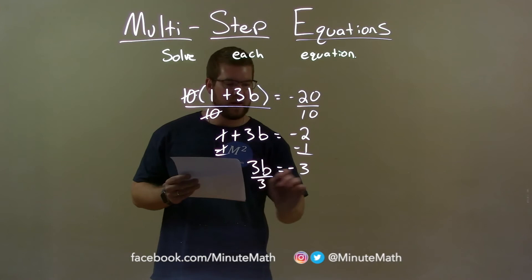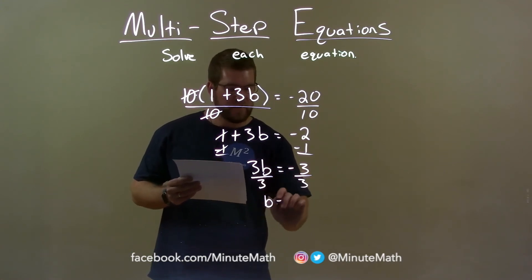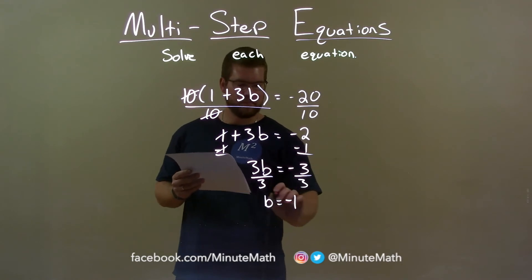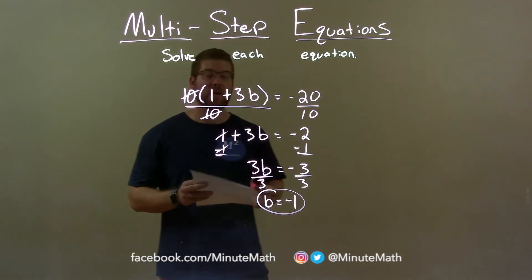Divide both sides by 3, b is now by itself and negative 3 divided by 3 is negative 1. So our final answer is b equals negative 1.